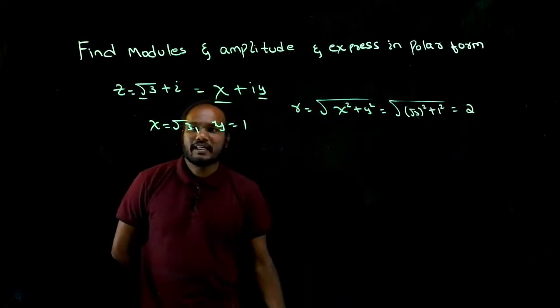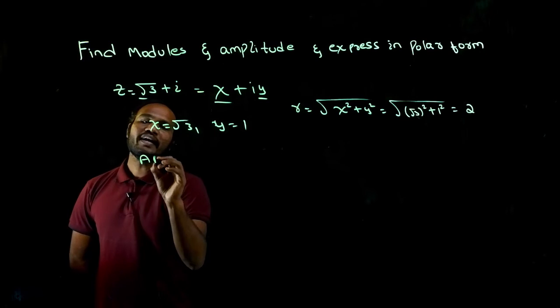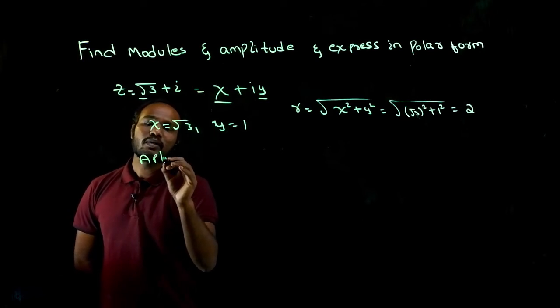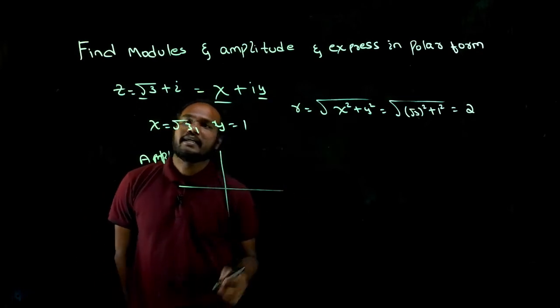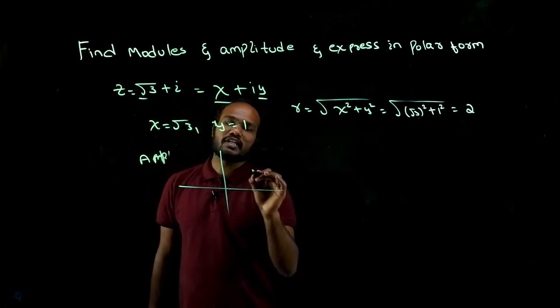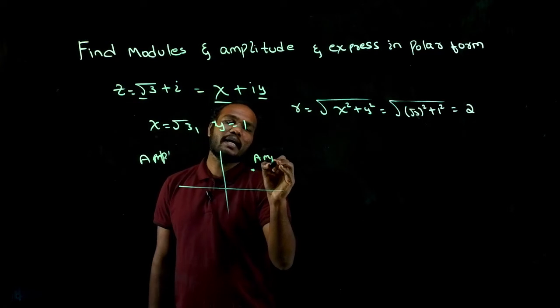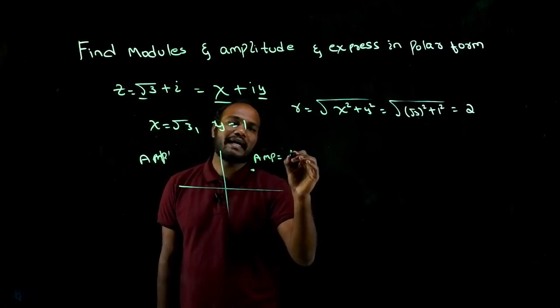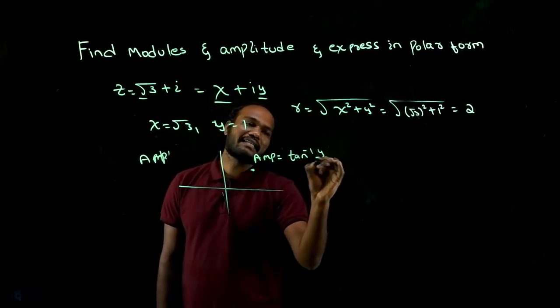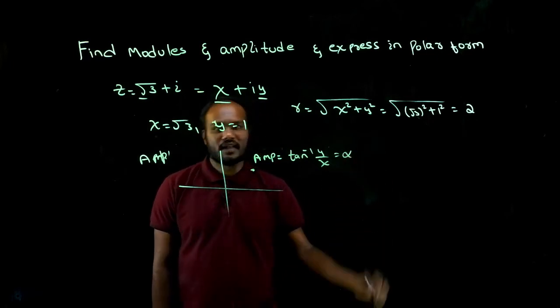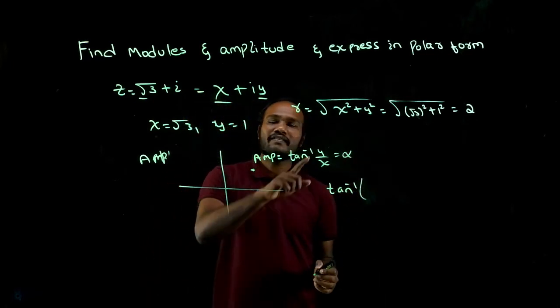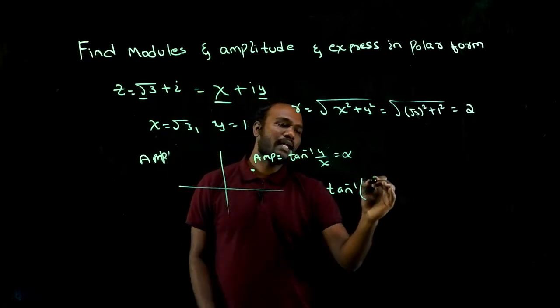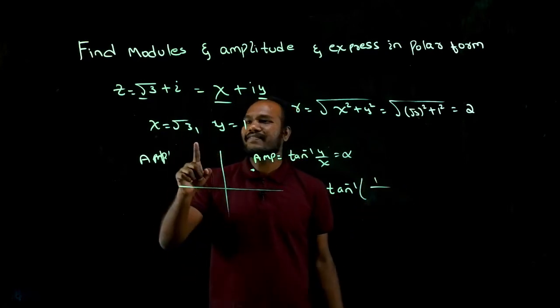Next we have to find amplitude. To find amplitude, first we have to find the quadrant. x is positive, y is positive, which means first quadrant. In this quadrant, amplitude equals tan inverse of y by x. So we have to find tan inverse of y value, which is 1, upon x value.